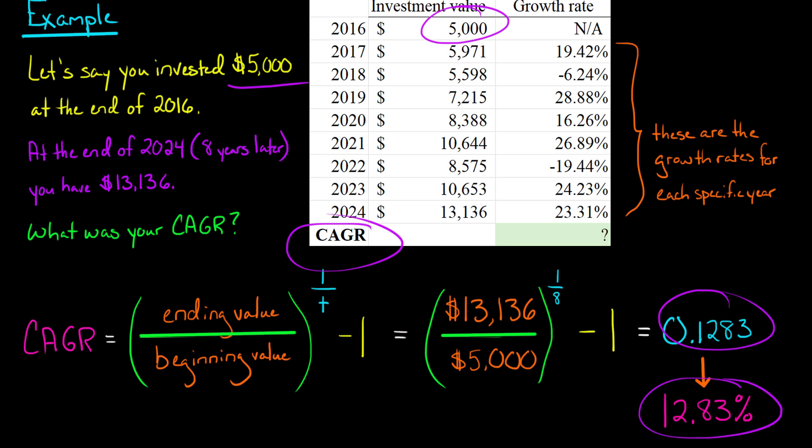We put $5,000 in, eight periods later, we have $13,136. So we had a compound annual growth rate of 12.83%. So what does that mean? Here's another way of thinking about it. If you take $5,000, I invest it, and then I'm going to get a return of one plus 0.1283, and then this to the eighth power. This will give you this amount.